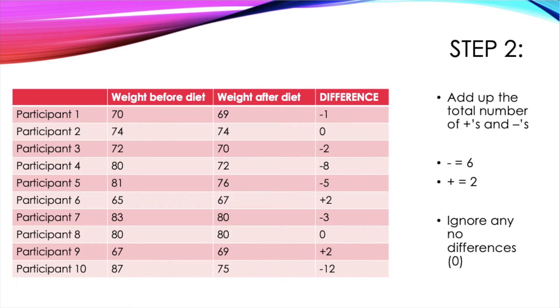The next stage is to simply add up the total number of positives and to add up the total number of negatives. In this scenario, the total number of negatives is 6 and the positives is 2. And once again, you should ignore any no differences, which are indicated with a 0.